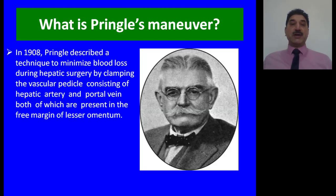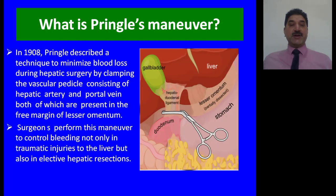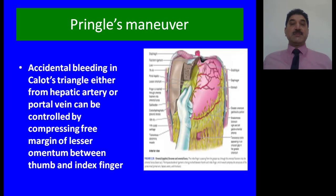What is Pringle's maneuver? In 1908, Pringle described a technique to minimize blood loss during hepatic surgery by clamping the vascular pedicle consisting of the hepatic artery and portal vein, both of which are present in the free margin of the lesser omentum. Surgeons perform this maneuver to control bleeding not only in traumatic injury to the liver but also in elective hepatic resections. Accidental bleeding in Calot's triangle, either from the hepatic artery or portal vein, can be controlled by compressing the free margin of the lesser omentum between the thumb and index finger.